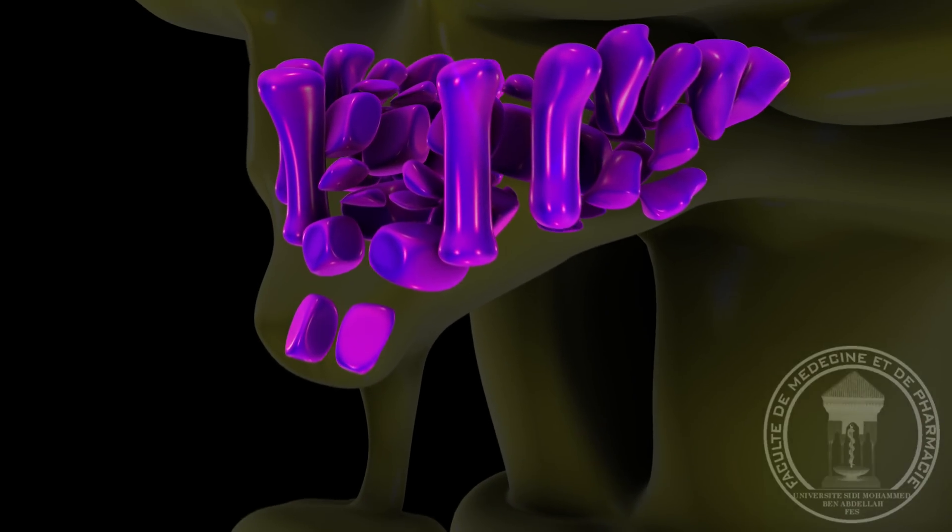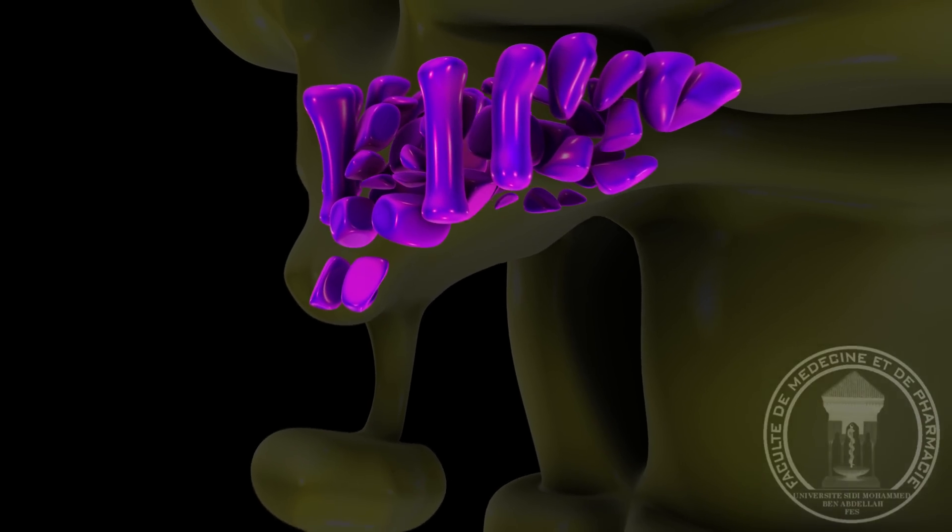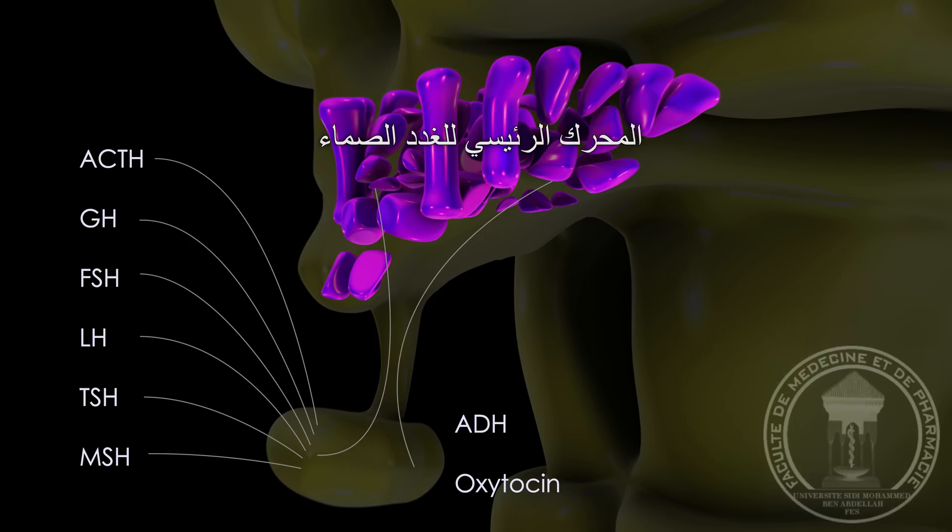يعتبر الوطاء المحرك الرئيسي للغدة الصماء في الجسم كله إذ أنه يتحكم في إفرازات الغدة النخامية التي تنتج أهم الهرمونات في الجسم